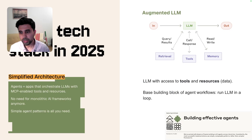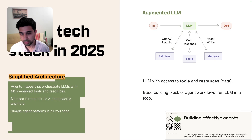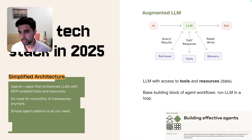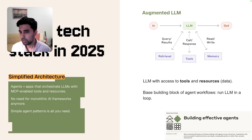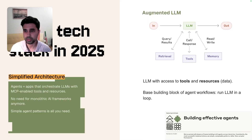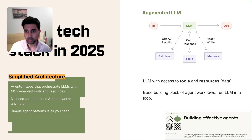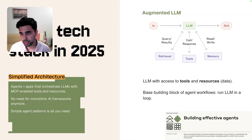Anthropic released a very influential blog post called 'Building Effective Agents' at the end of last year and beginning of this year. They highlighted agent patterns that work well in production. The simplest is an augmented LLM — an LLM with access to tools, resources, or data. It's the base building block: you run this LLM in a loop, it gets an input, it may call tools or retrieve data, runs several iterations, and returns a response at the end.